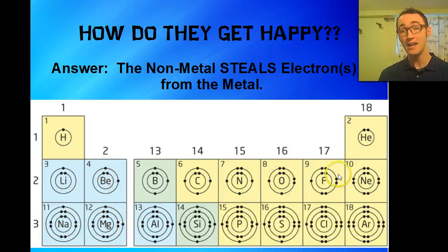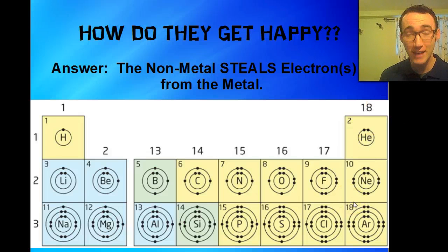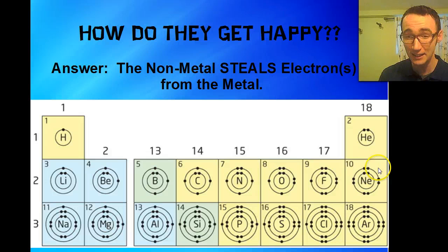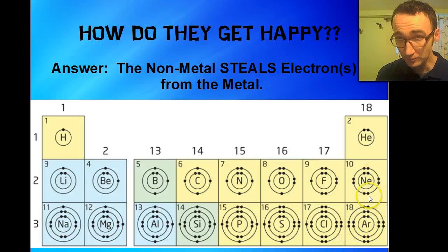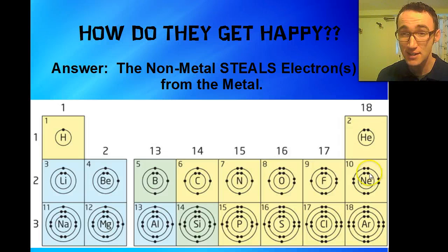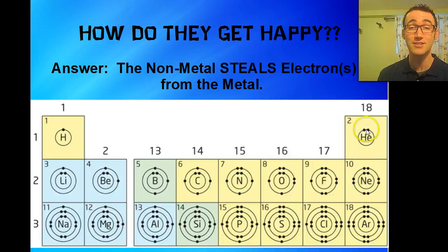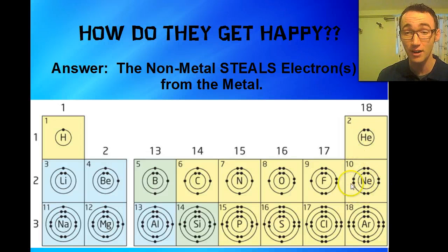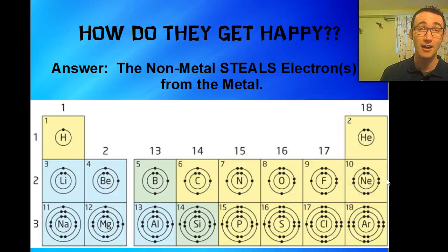Until you get to these ones over here — the noble gases — they have a full set of electrons in their outer shell, and we call those electrons valence electrons. The maximum in the first row is two, and then the maximum in the next two rows is eight. So if you have eight electrons in your outer shell, you are happy.